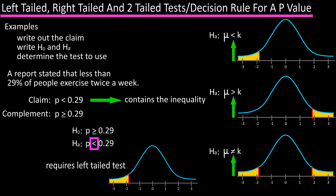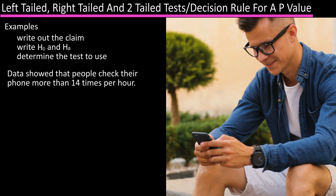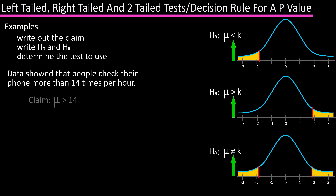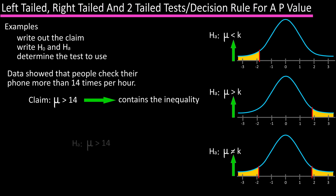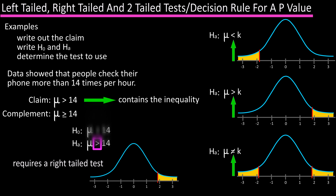One more example: a research firm released data stating that people check their phones more than 14 times an hour. The claim is that mu, the population mean, is greater than 14. H sub A is mu greater than 14, and the null hypothesis is mu less than or equal to 14, with the equality in the statement. Since the alternative hypothesis has the greater-than inequality, this requires a right-tailed test.